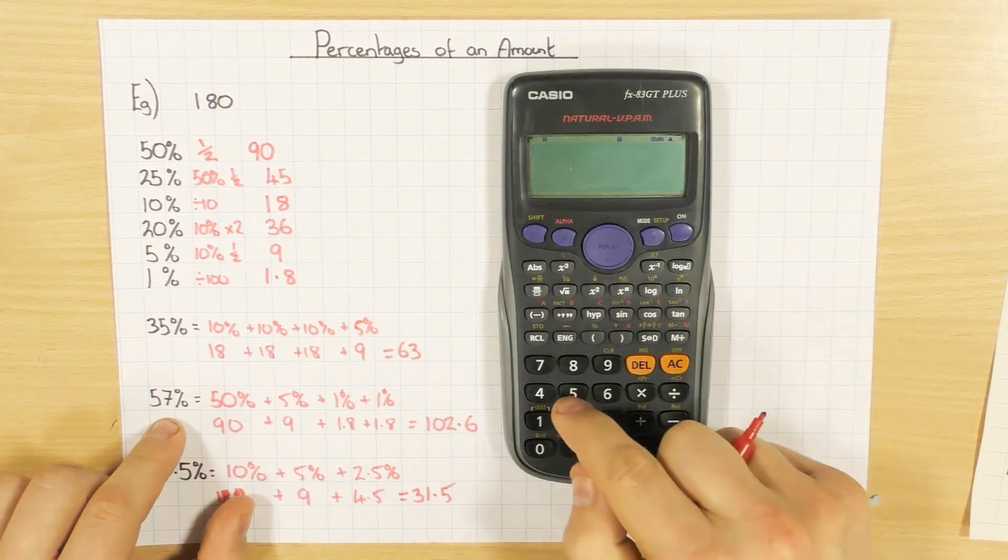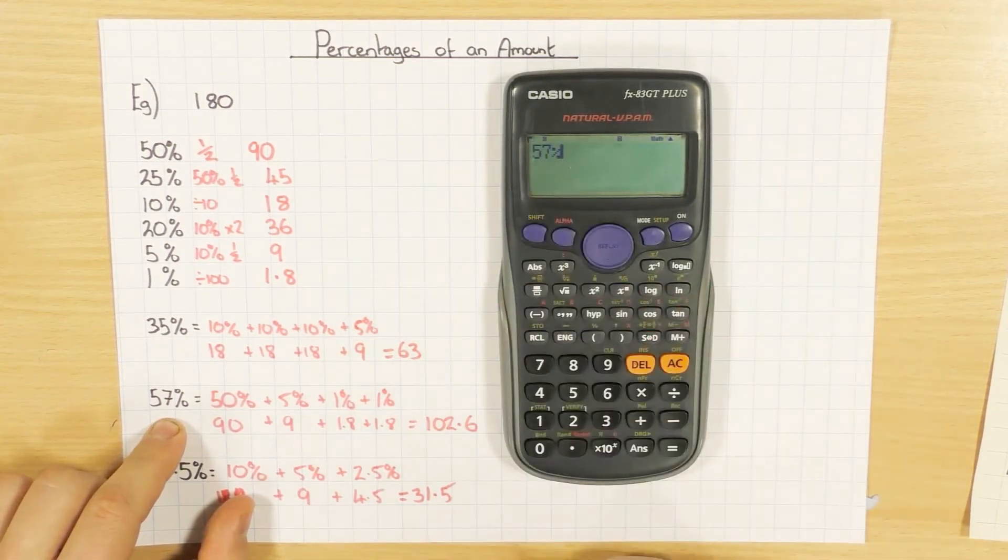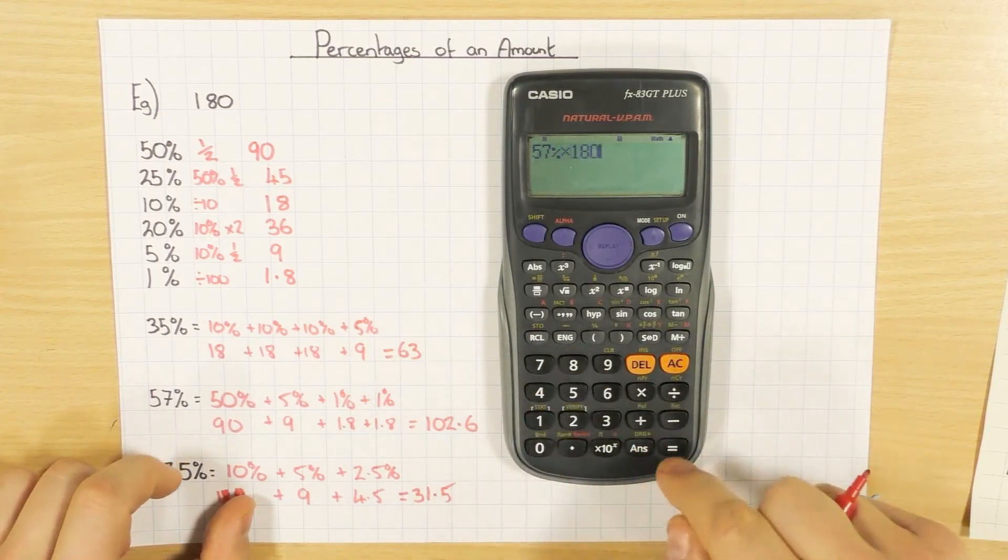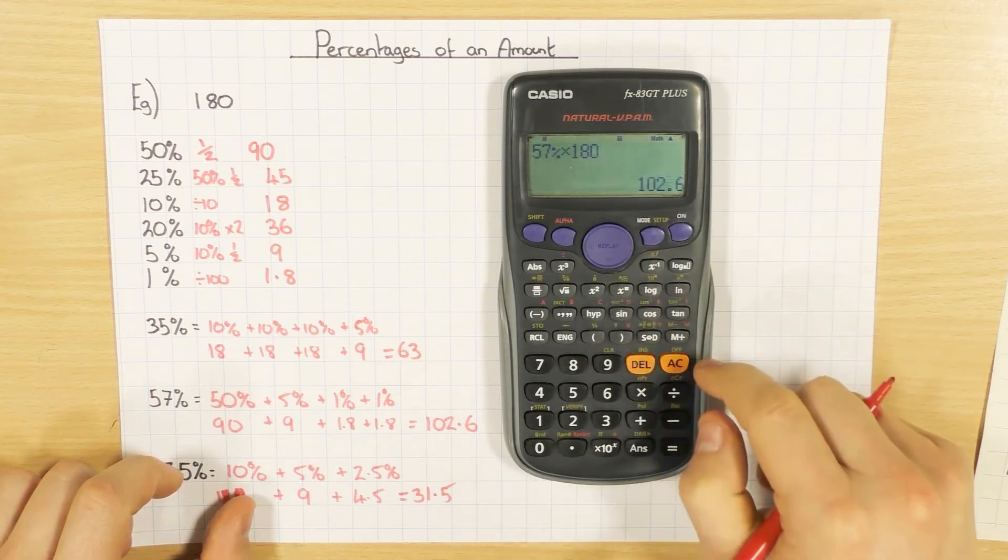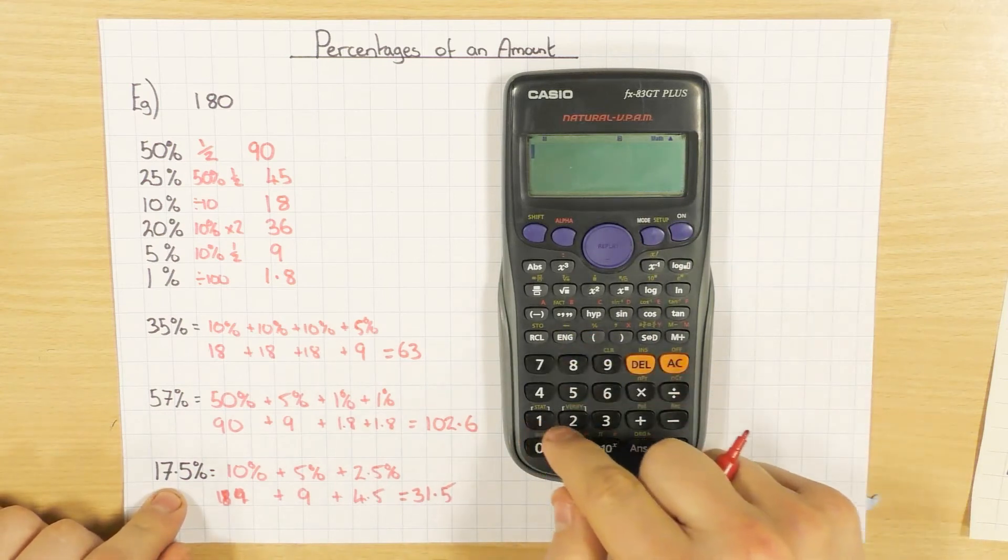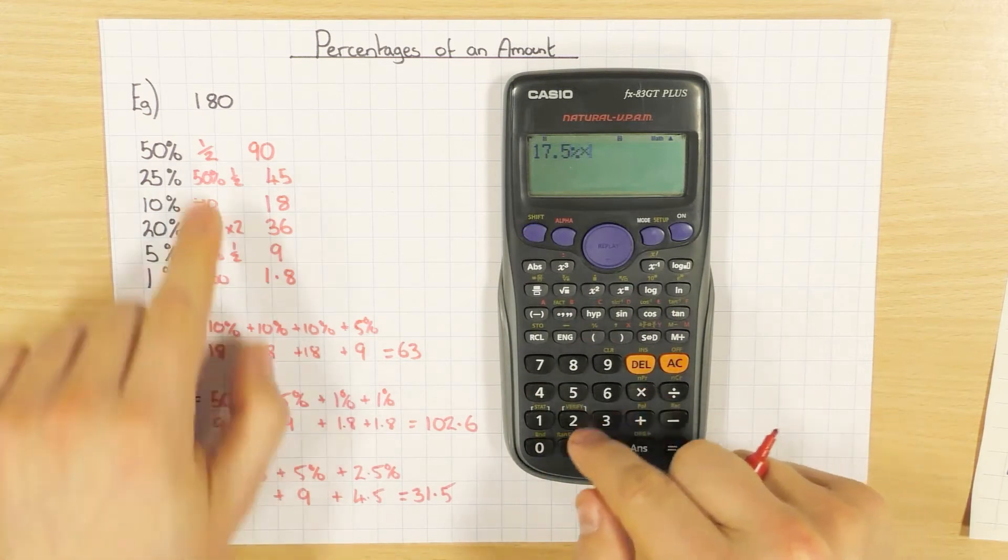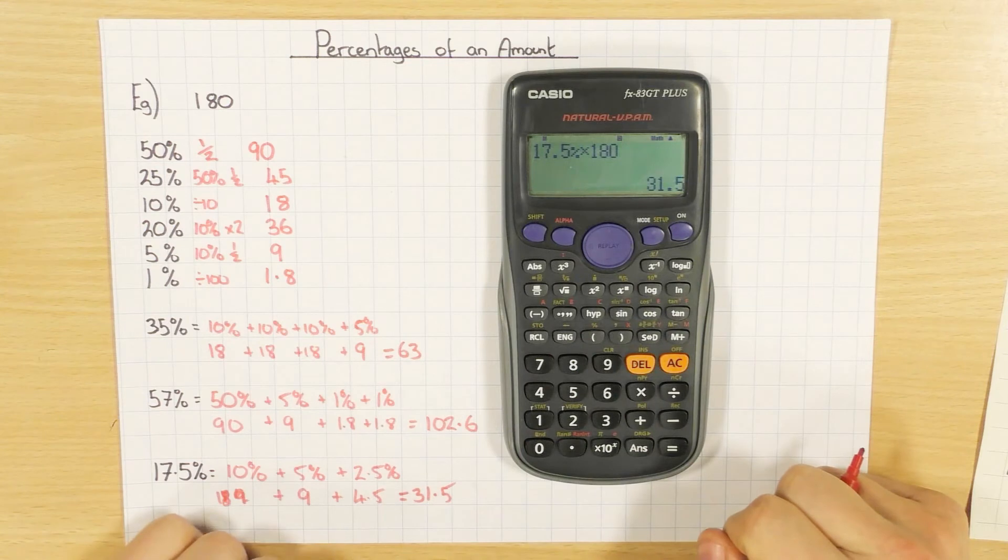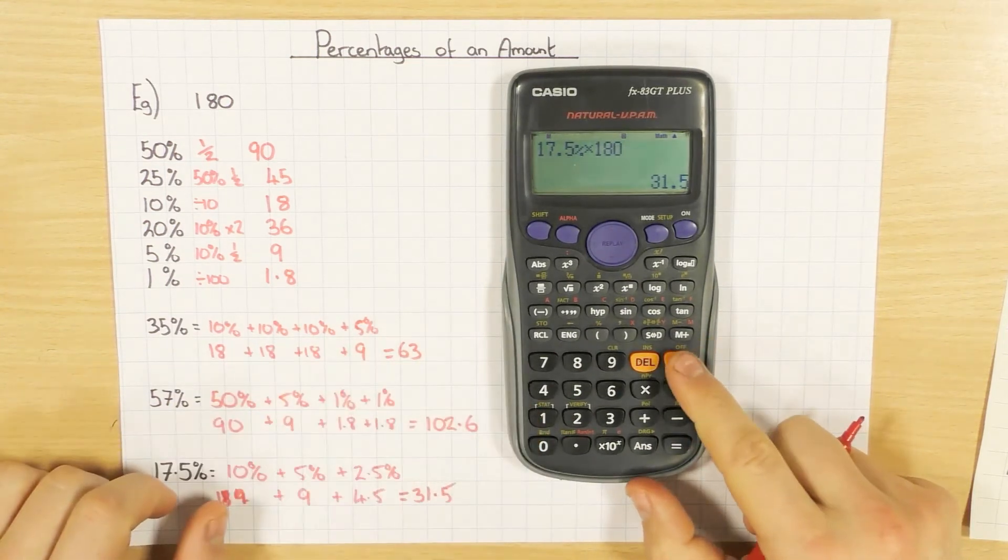I'll just do the same thing again for 57. So 57, shift, left bracket to get 57%, times by 180, which is what we want to work out. If you get a fraction, not a problem, press the SD button, convert it to a decimal, 102.6. And last one, 17.5% times by 180. And again, we've got a fraction, SD at 31.5. So to find a percentage using these calculators is really handy.